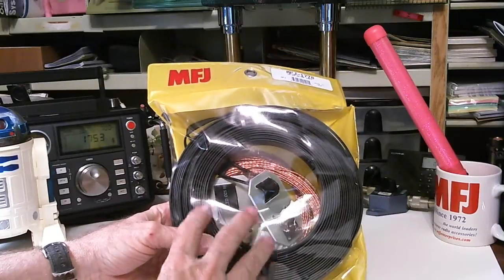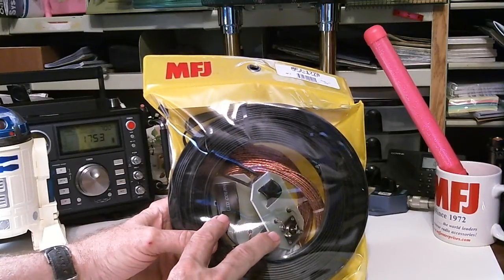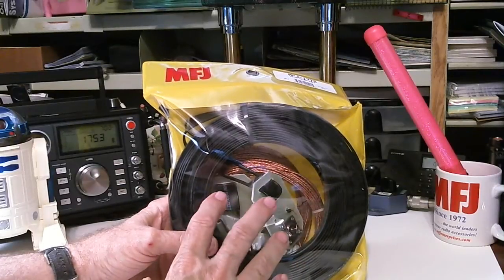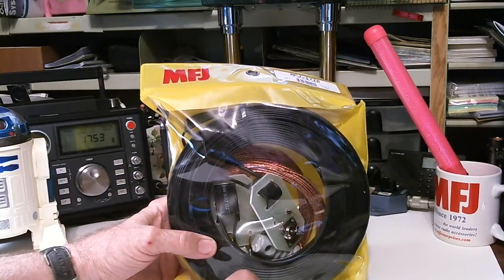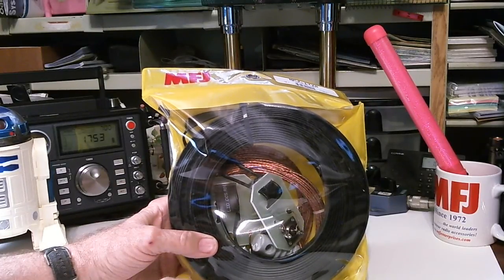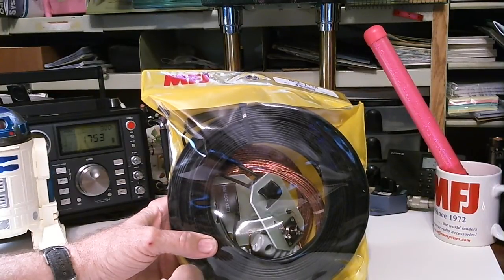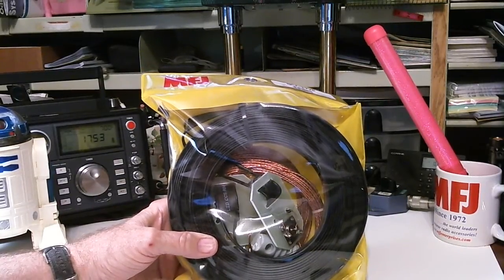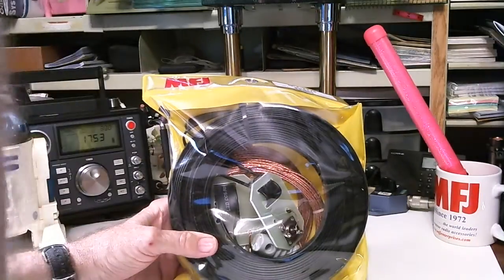This is a G5RV antenna. It's used by amateur radio operators for transmitting, and it can be used, like I do, for receiving. It's a multi-band center-fed antenna, and it was originally designed to operate on three halves wavelength for 14 meters, which is right in the middle of the band we'd like to listen to.